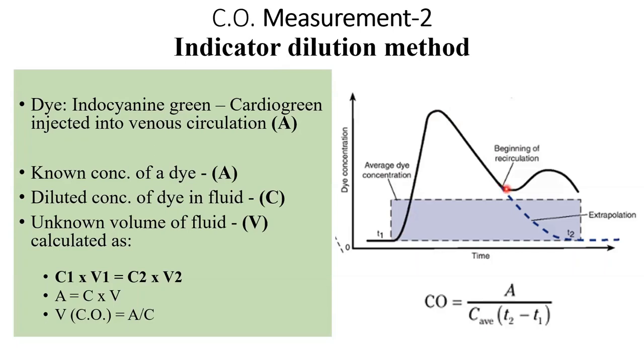We are not interested in recirculation. We are only interested in one circulation because we want to understand cardiac output for that single circulation. So from this point onwards, we extrapolate what the value would be along the projected line if there were only one circulation.